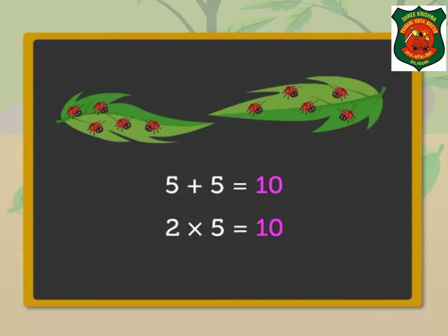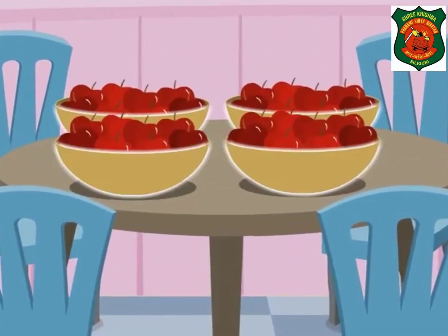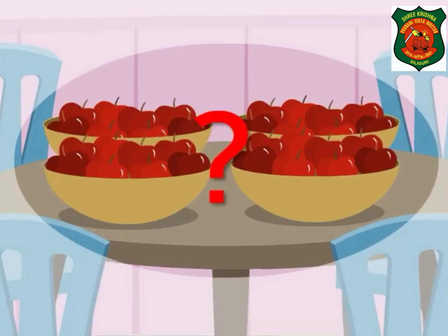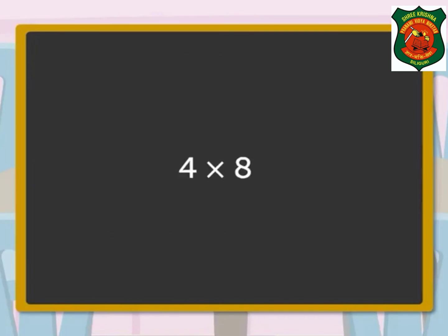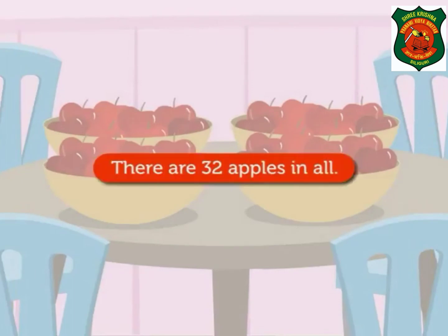Hence there are ten ladybugs in all. Next, as you know, we can directly multiply numbers with the help of tables if you learn them correctly. Now look at four bowls — there are eight red apples in each. How many apples are there in all? The answer can be found by multiplying four and eight. Thus, four into eight is equal to 32, so there are 32 apples in all.